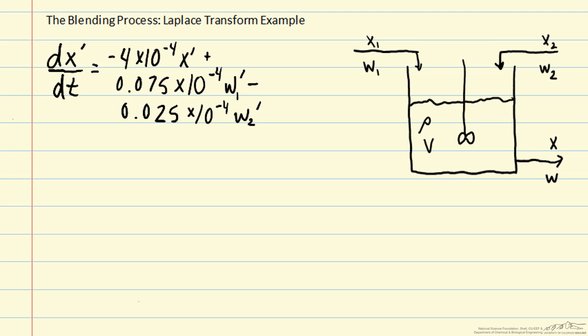So the first thing that we're going to do here is to take the Laplace transform of each term. The Laplace transform of the time derivative is s capital X' of s minus any initial deviation in mass fraction from the steady state. And here we're going to just assume zero deviation.